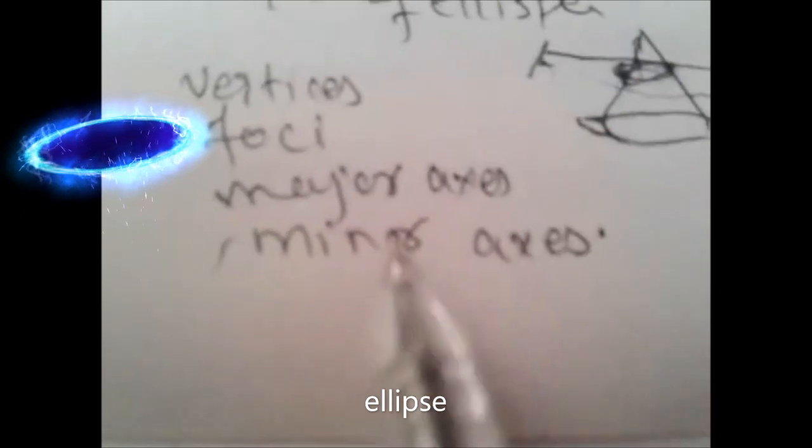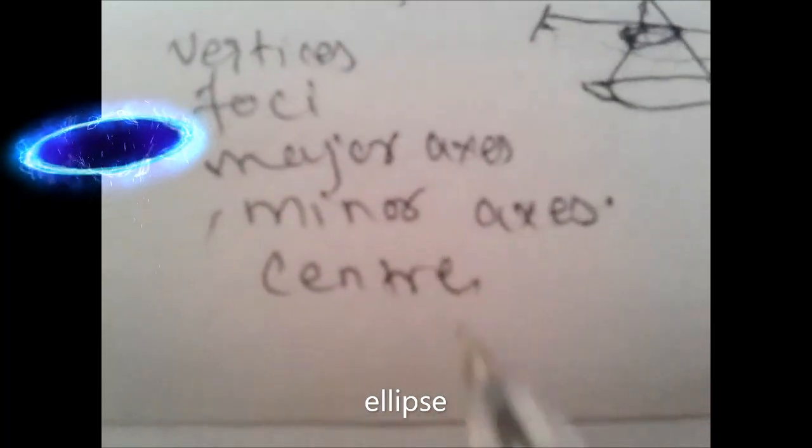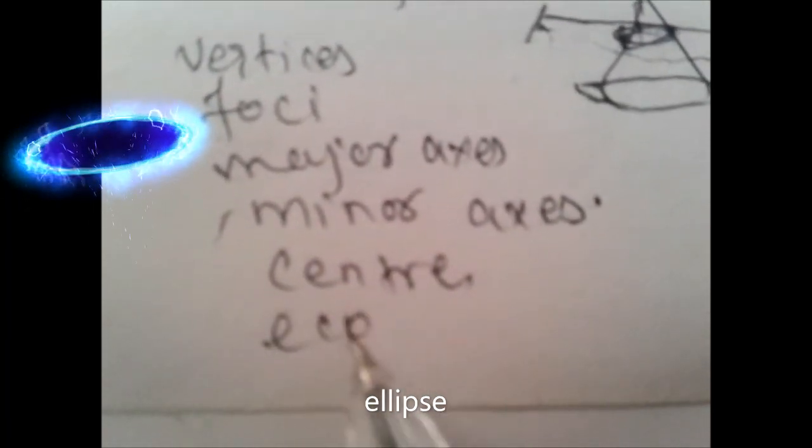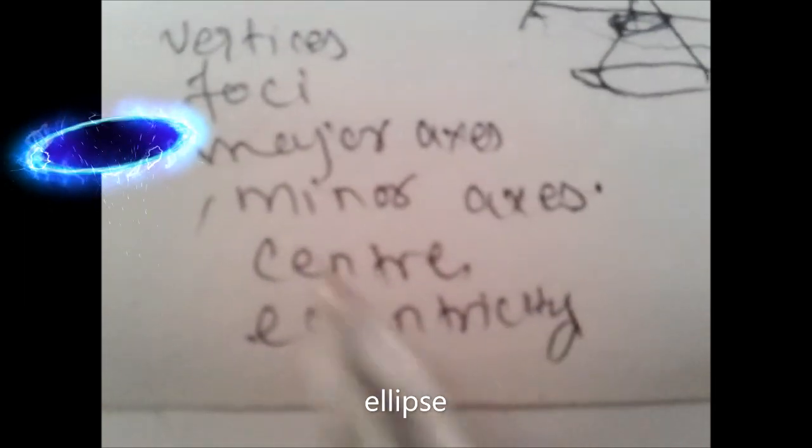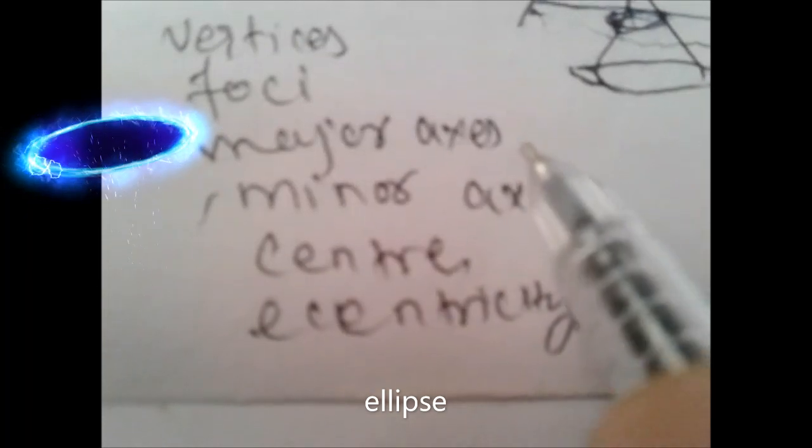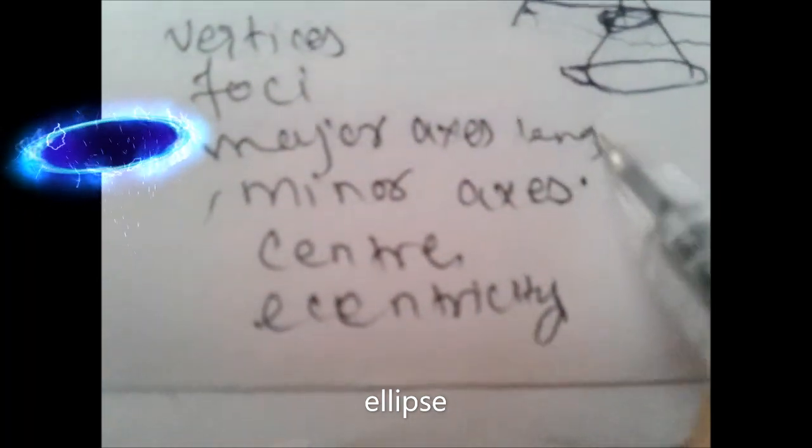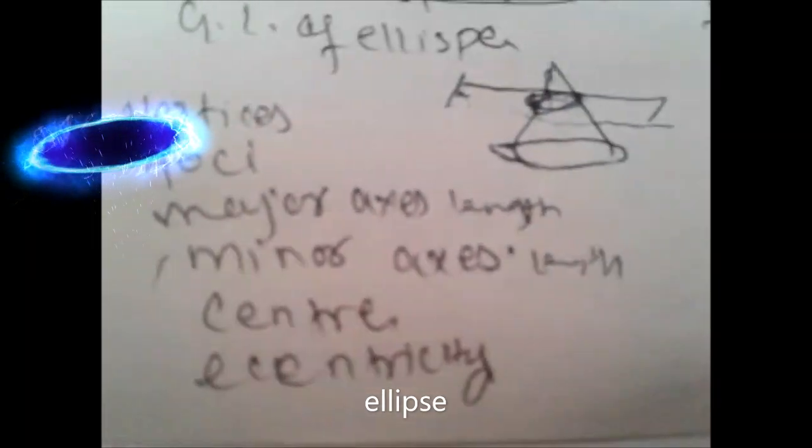Other things to be known: center, eccentricity, major axis and its length, and minor axis and its length.